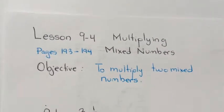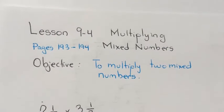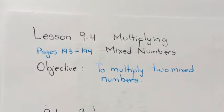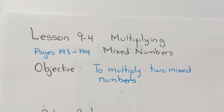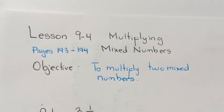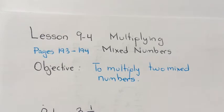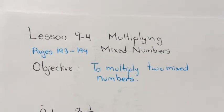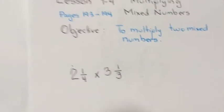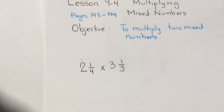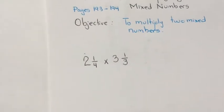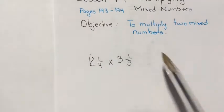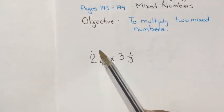Good morning everyone. This lesson is lesson 9.4, pages 193 and 194: multiplying mixed numbers. The objective is to multiply two mixed numbers. Let's continue with this example problem from your book. In this case, we have a mixed number multiplied by another mixed number.